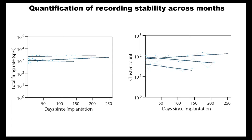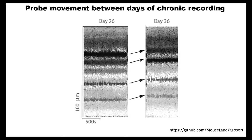If we zoom into these drift maps — where every dot is a spike and the x-axis is time — you can see that the patterns on two recording days may look similar, but they seem to be shifted along the vertical direction. In order to compensate for this vertical shift, we used a modified version of the Kilosort algorithm that was able to move the recordings such that they matched, and then sorted them together to extract spikes across both days.